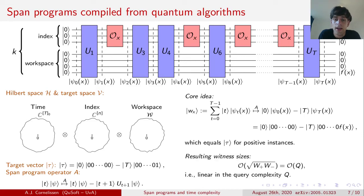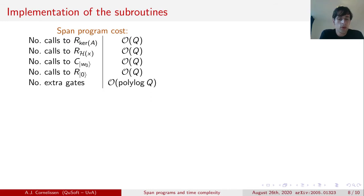Using this idea and a number of other technical details, we managed to show that our span program has positive and negative witness sizes both linear in the query complexity. That means that the resulting square root of W+ times W− also scales linearly in the query complexity. This quantity is exactly the number of calls the span program algorithm makes to the four subroutines it is given access to. So, in order to figure out how costly it is to implement the span program algorithm, it remains to figure out how costly it is to implement these subroutines.